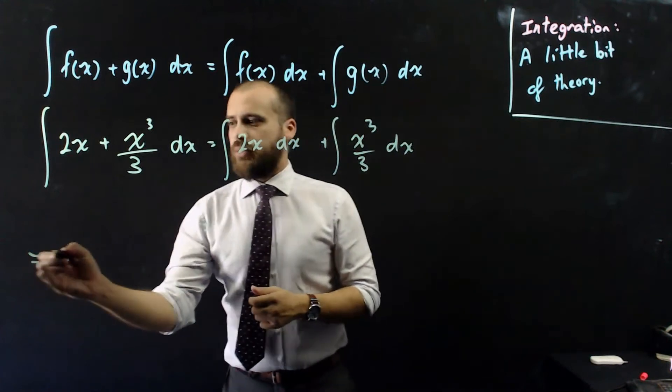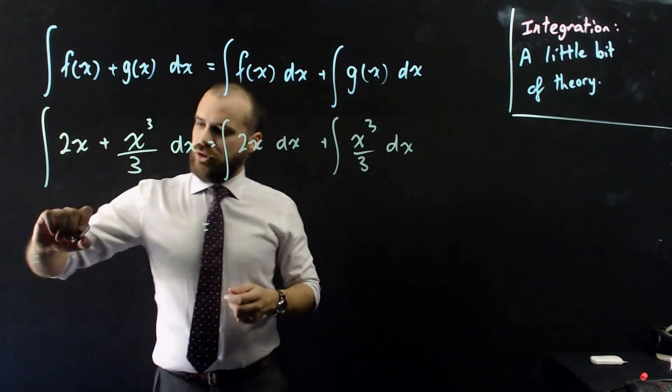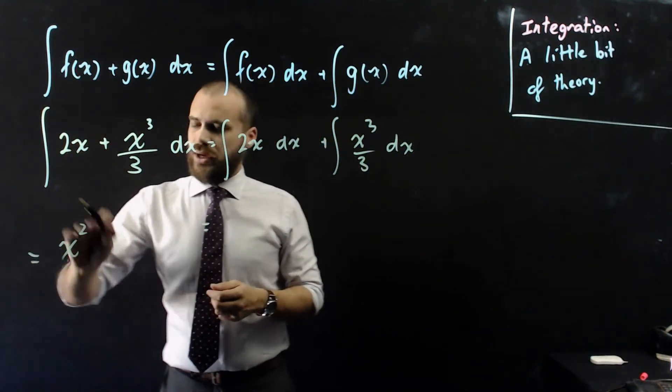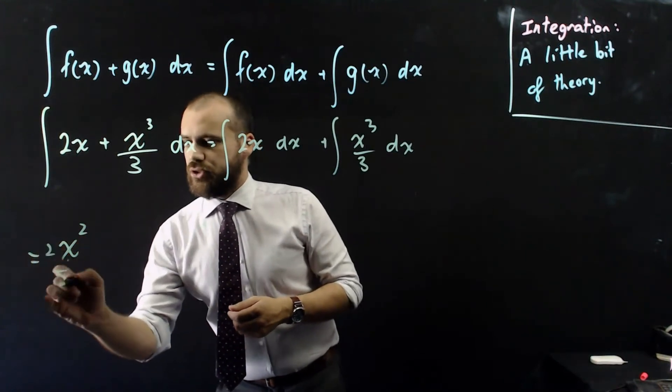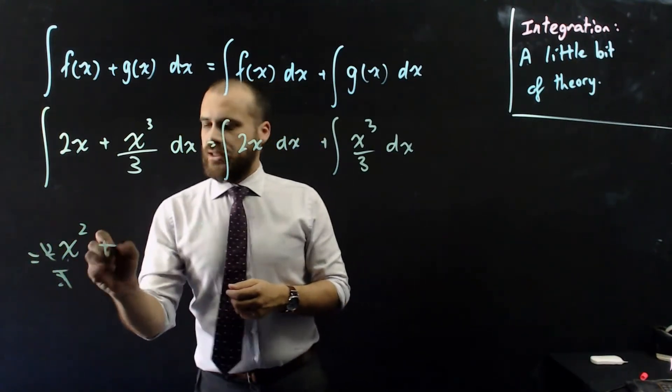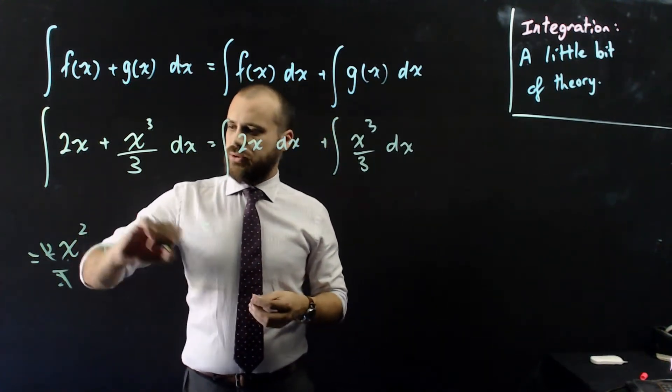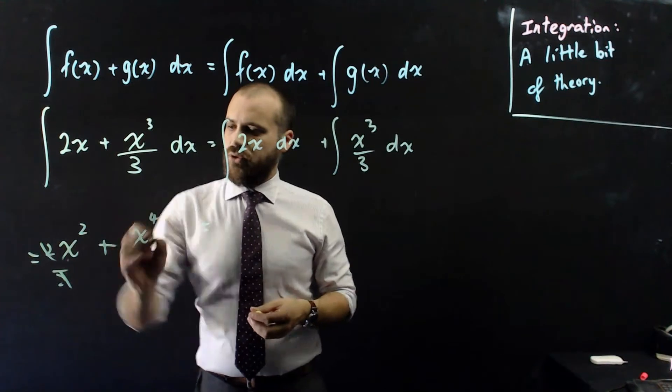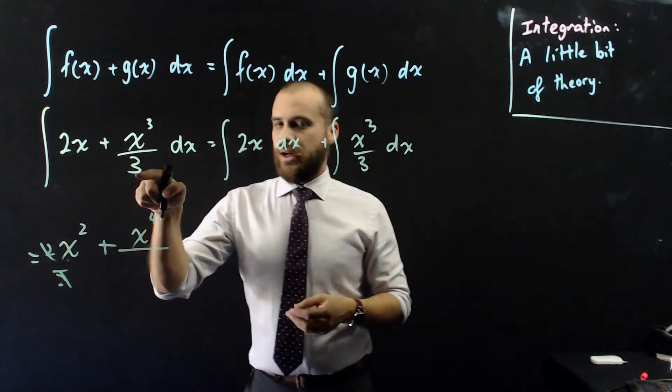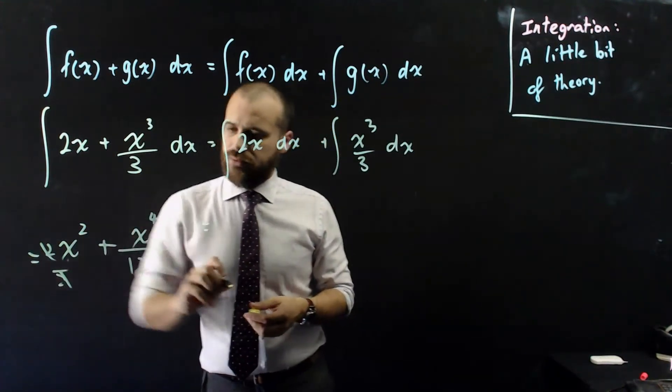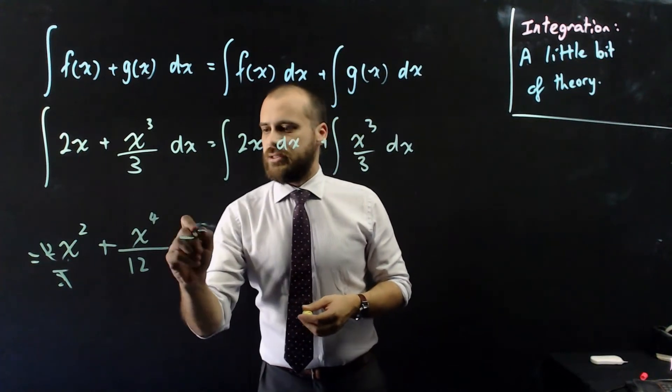And when we do that, we'll get the same answer no matter how we work it. The integral of 2x is x squared, 2 over 2, and the 2's cancel out, so just x squared. And the integral of this bit here is equal to x to the 4 divided by 3 times 4, which is 12. And then there's a plus c on the end.